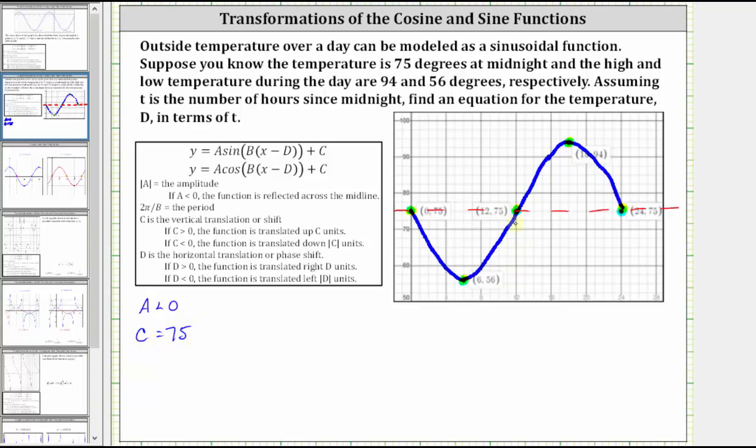And now let's determine the value of a, where the absolute value of a is equal to the amplitude. The amplitude is the distance from the midline to a maximum, or the distance from the midline to a minimum. So let's find the amplitude by determining this distance here. The high temperature is 94 degrees. The midline represents 75 degrees. 94 degrees minus 75 degrees is 19 degrees, and therefore the amplitude is equal to 19. So we know the absolute value of a is equal to 19, but since a has to be negative, a is negative 19.